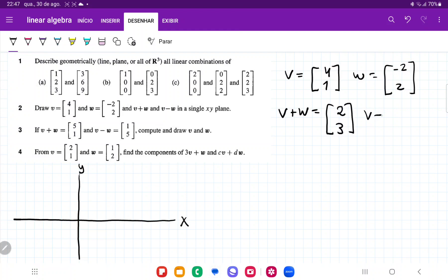And then we have that v minus w, that's going to be equal to 4 minus the first component minus the second, so 4 minus -2 is 6, and then 1 minus 2 is -1.